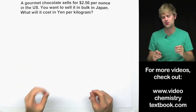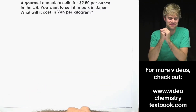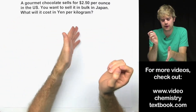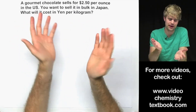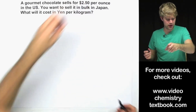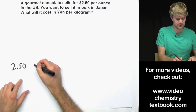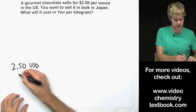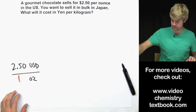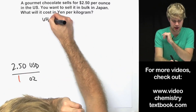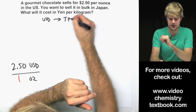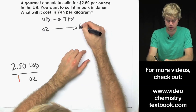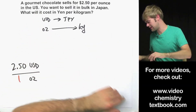A gourmet chocolate sells for $2.50 per ounce in the US. You want to sell it in bulk in Japan — what will it cost in Yen per kilogram? Japan uses the metric system so they weigh in kilograms. We're starting with $2.50 USD per one ounce. We want to go from US dollars to Japanese Yen, and also from ounces to kilograms. Let's look at what expressions tell us how these units relate.